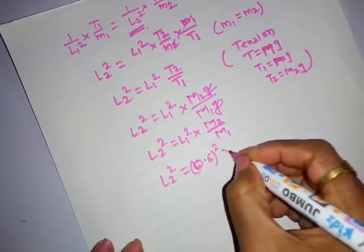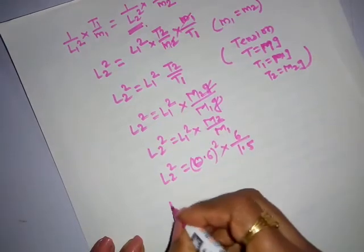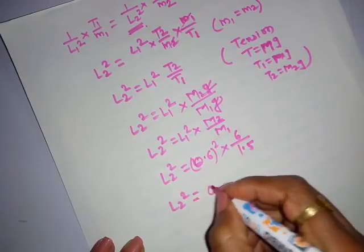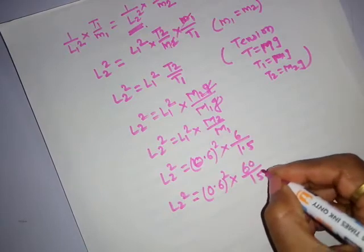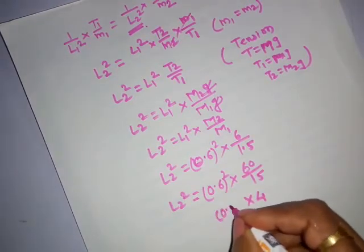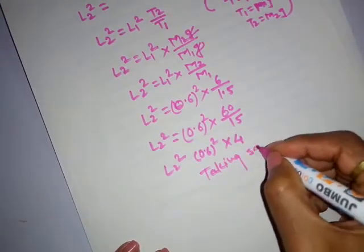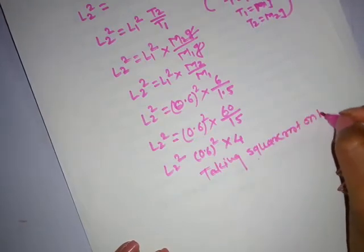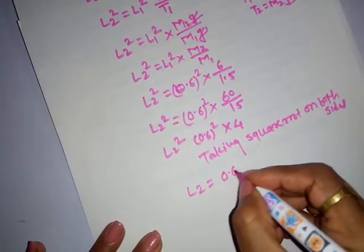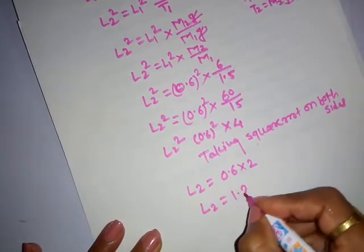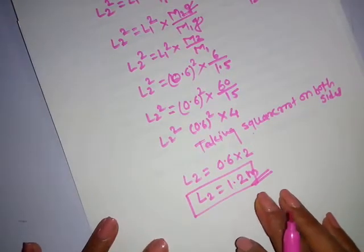Therefore L₂² = (0.6)² × 4. Taking the square root on both sides: L₂ = 0.6 × 2 = 1.2 meters. This is the vibrating length of the second wire.